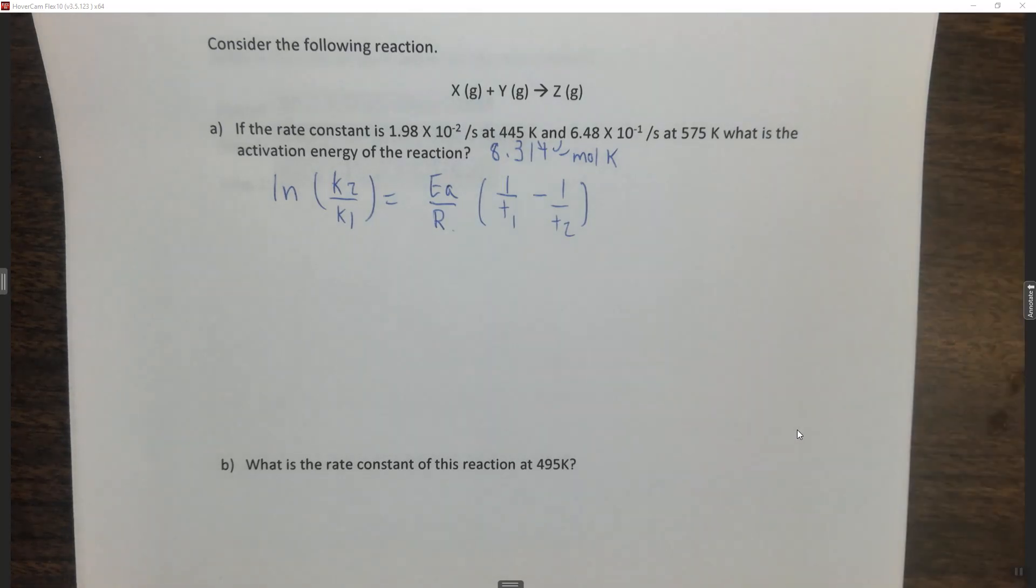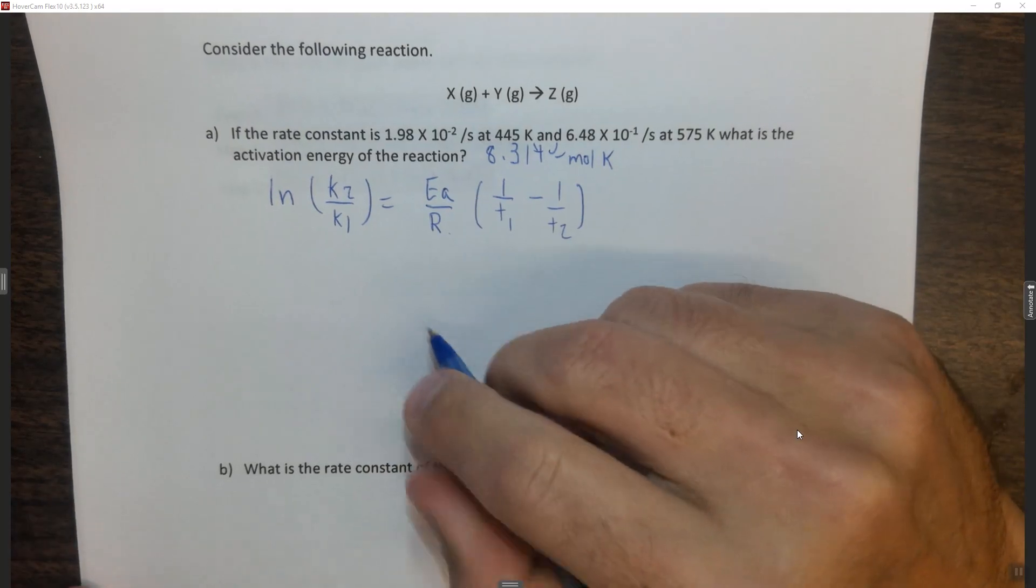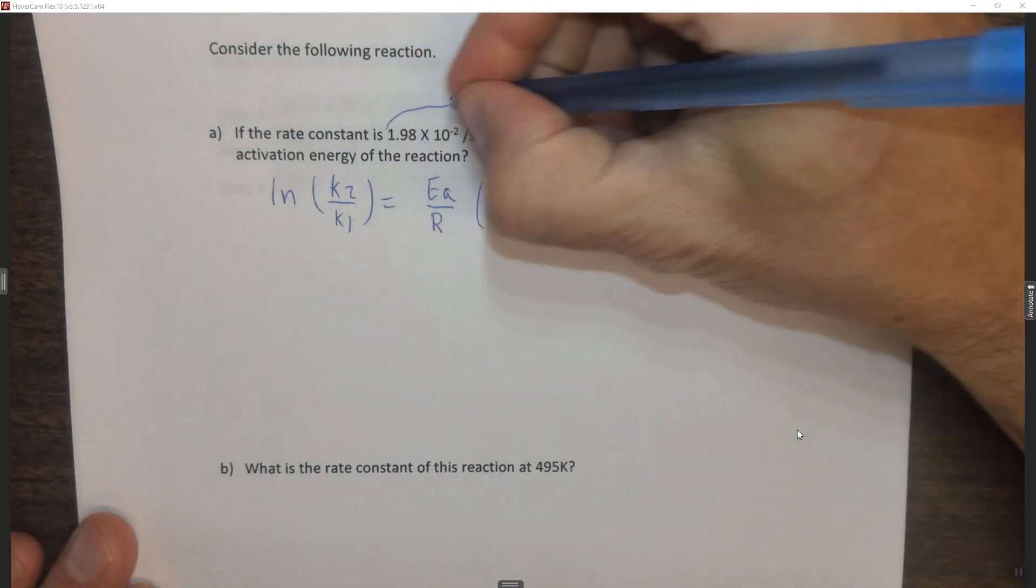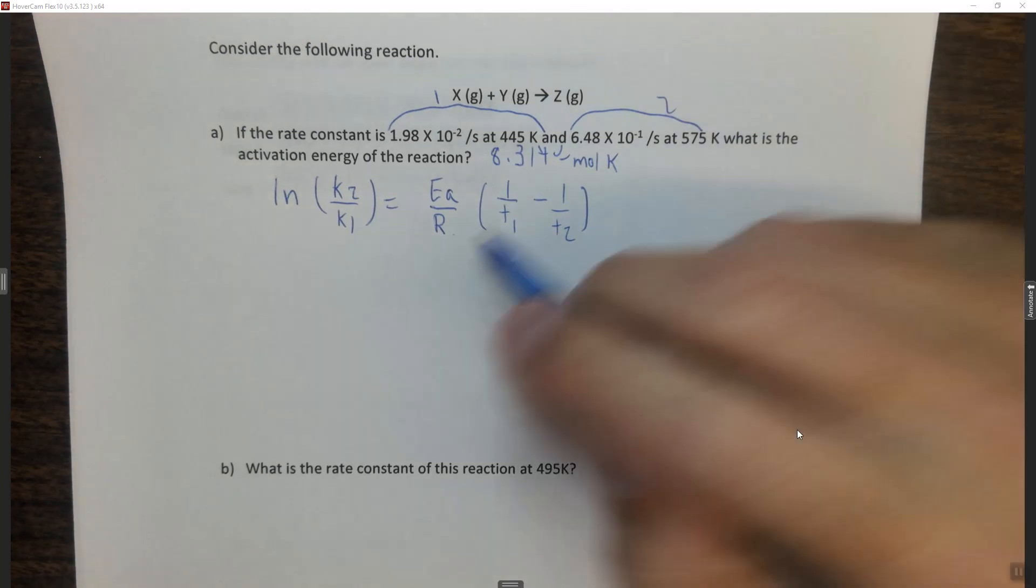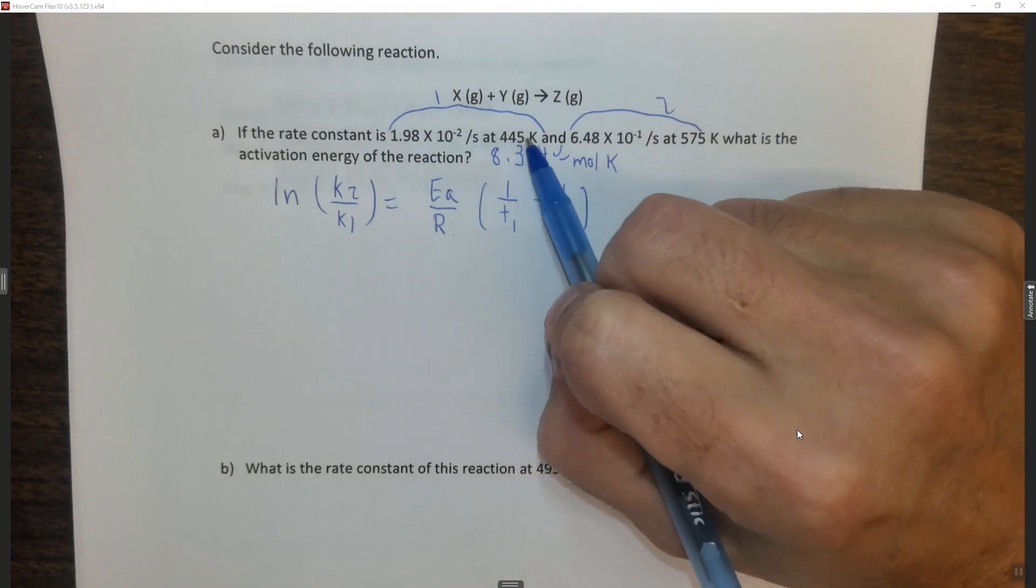Now we just plug it in. We need to decide a one and a two. Usually I put this one as the one and this one as the two just because it came first. You want to make sure your constant goes with your temperature.